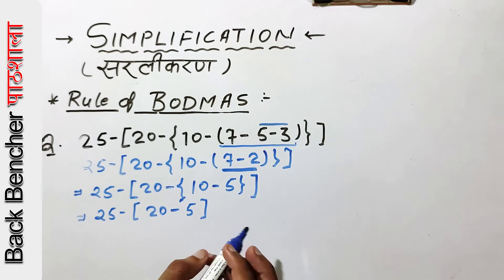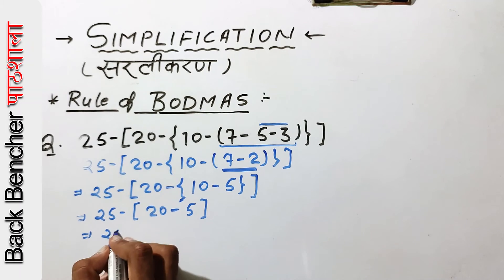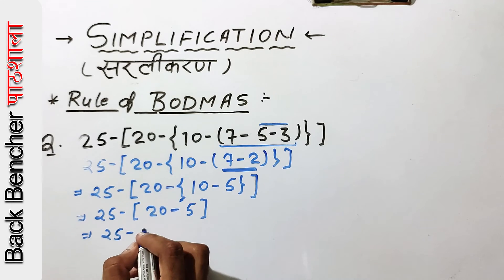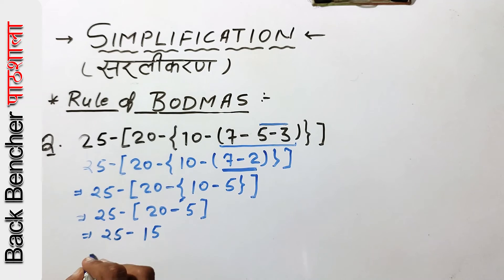Since it will be minus, it will be minus. Then we will solve this bracket. It will be 15. If we have 15, then we will have 10 as our answer. This is our right answer.